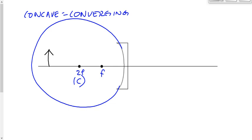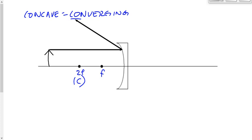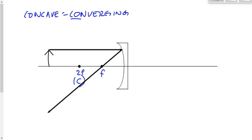There are three rays we can draw, but three that are very predictable. We're only going to draw two at a time for each mirror. First ray: always, no matter what mirror or where the object is, the first ray goes parallel to the principal axis. On a converging mirror, that ray goes down through the focal point — just like with lenses, except for lenses the focal point was on the other side of the lens, whereas here it's on the same side.